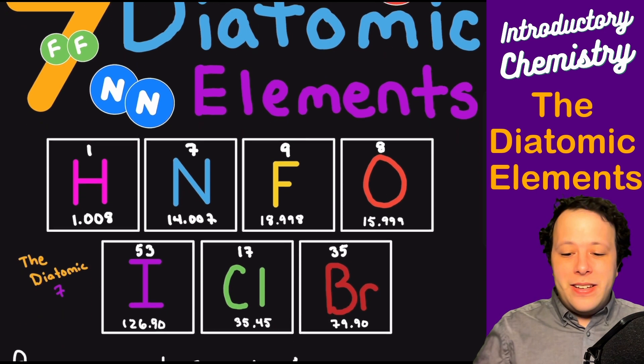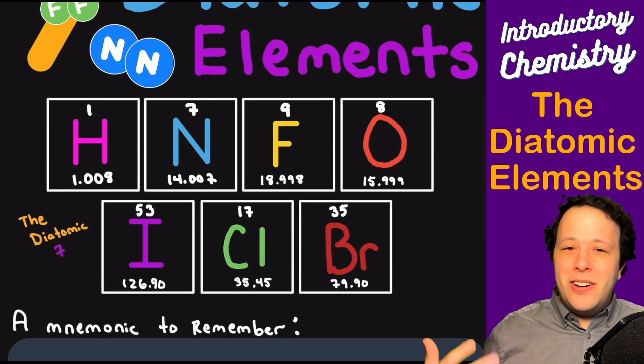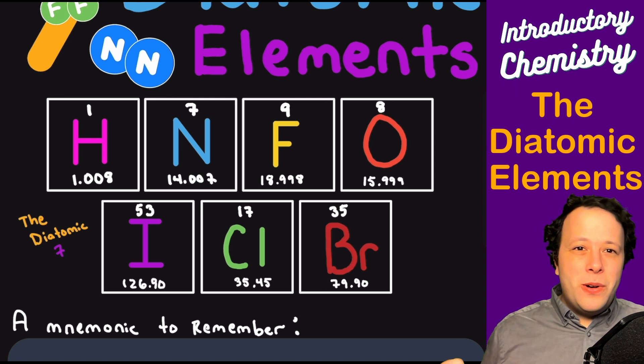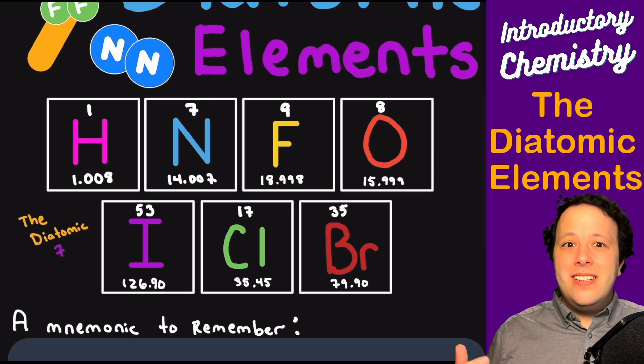So what are they? The seven diatomic elements, I like to call them the diatomic seven: hydrogen, nitrogen, fluorine, oxygen, iodine, chlorine, and bromine. All these different gases bond to themselves.